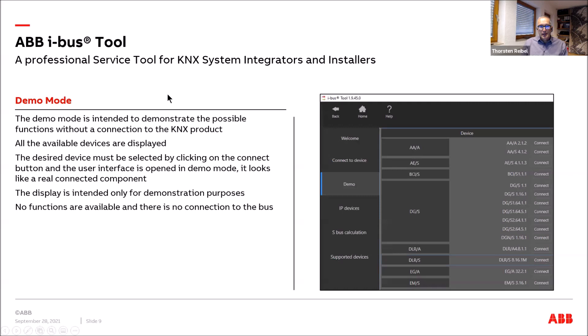Demo mode is very useful when you have no connected KNX devices but want to see how a product looks in the tool. Go to demo mode, click on the device you want to virtually connect to — not a real connection — and you see the same pages as with a real component. You can also navigate between pages in demo mode.